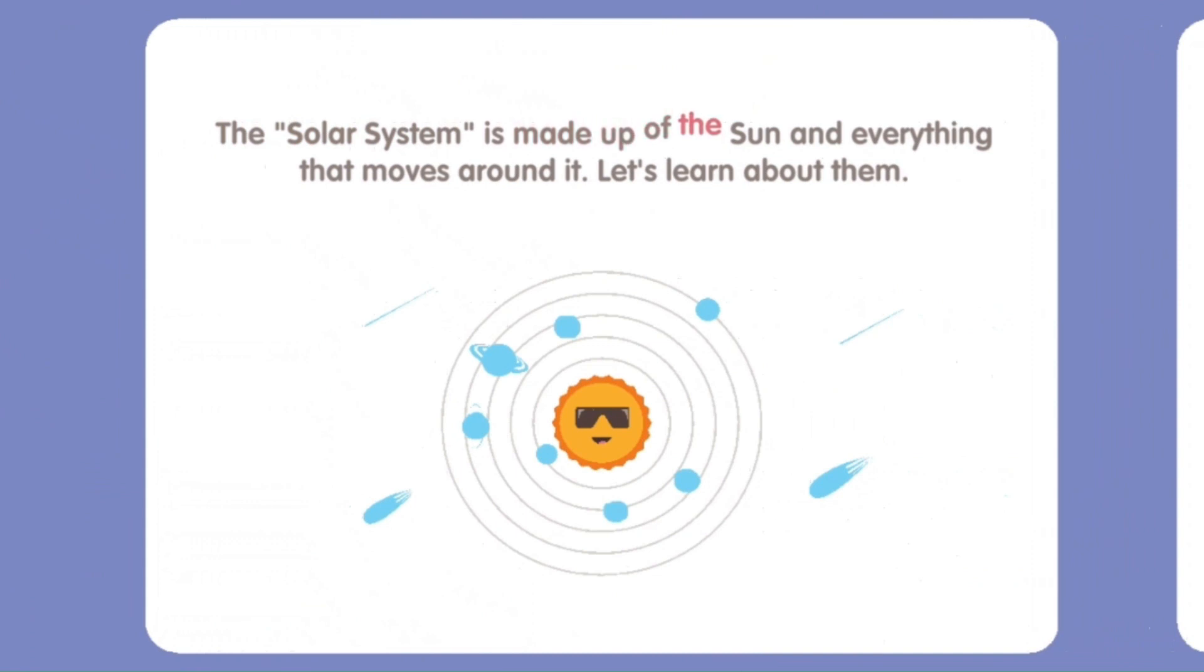The solar system is made up of the sun and everything that moves around it. Let's learn about them.